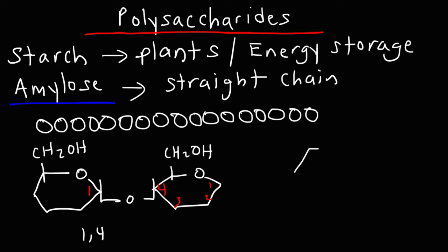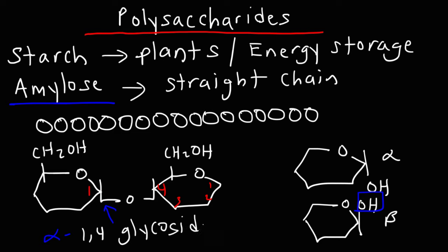You need to be familiar with the alpha and the beta forms of glucose. In the alpha form, the OH group on carbon 1 is facing the downward direction. The beta form of glucose has the OH group pointed up. So as you can see, this is the alpha form. Thus we have an alpha 1,4 glycosidic bond. Amylose only has this type of glycosidic bond.